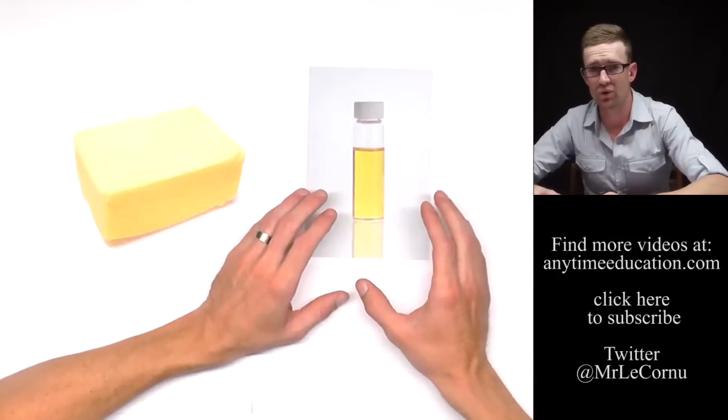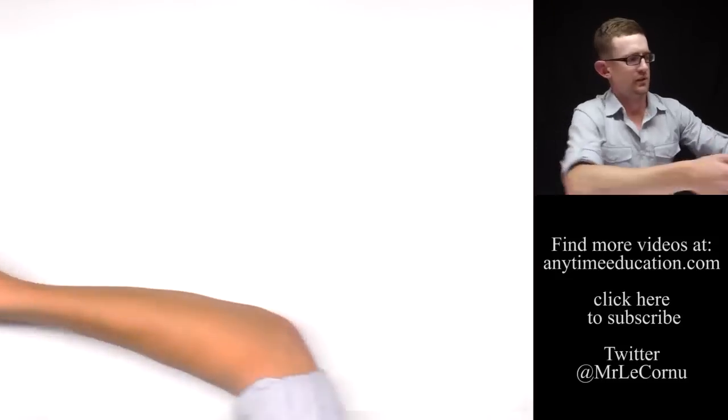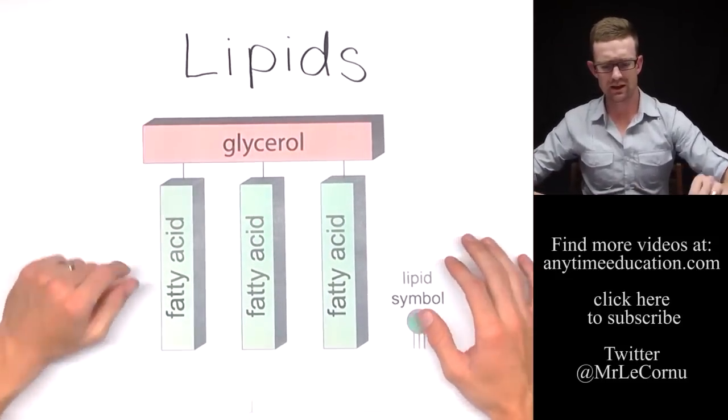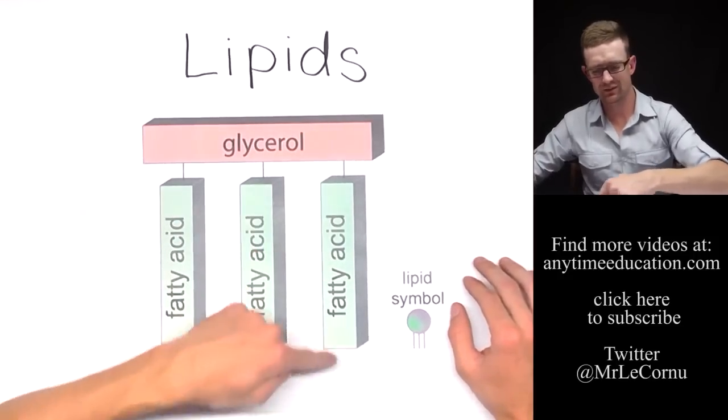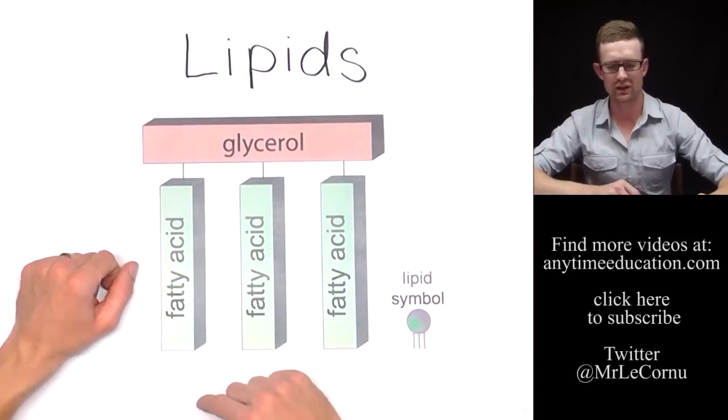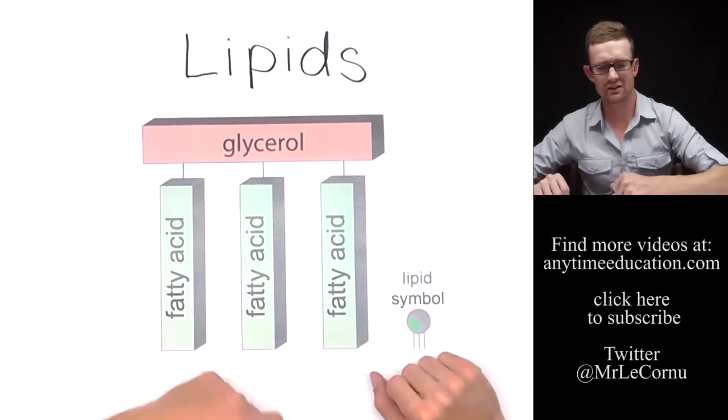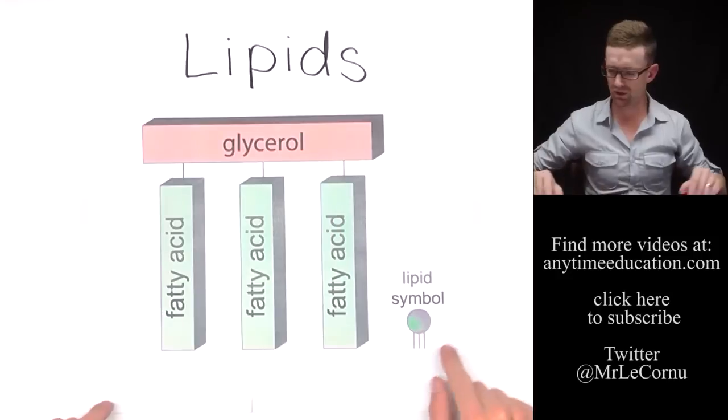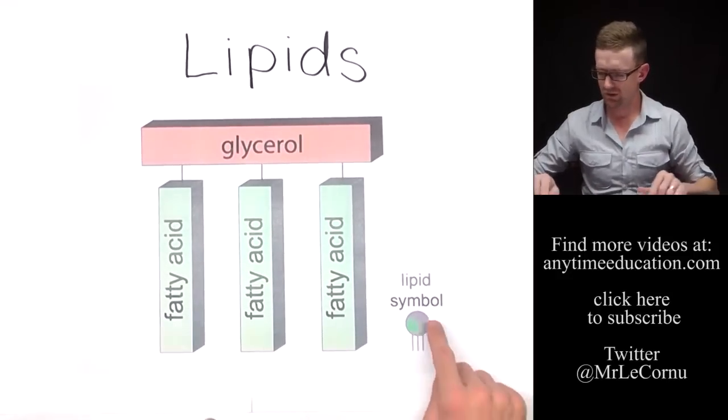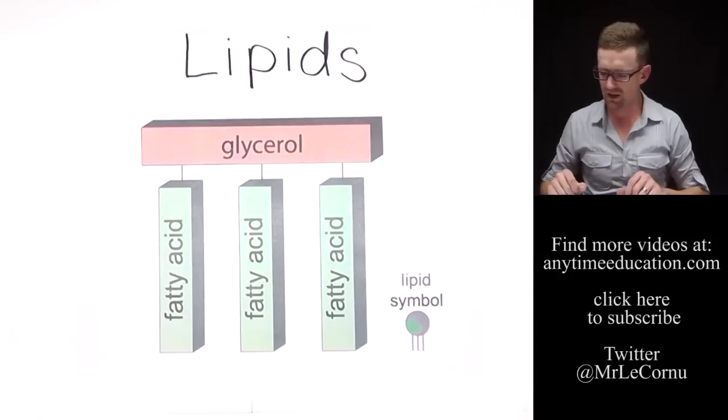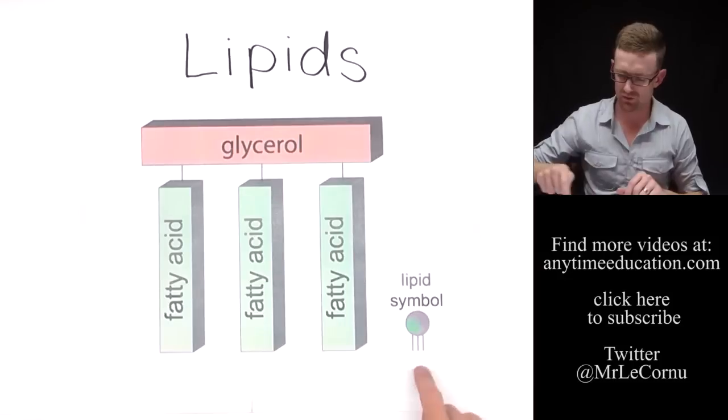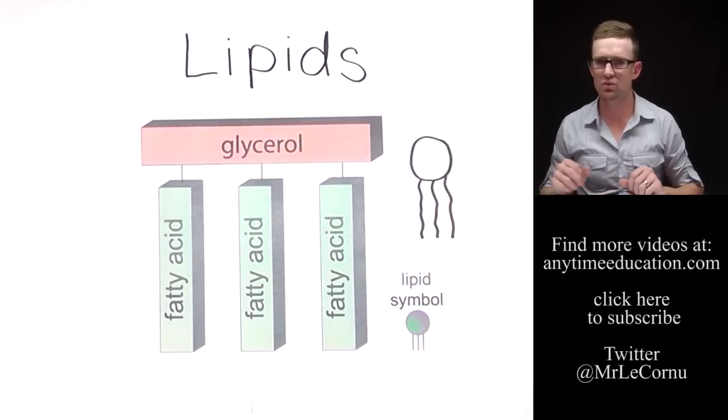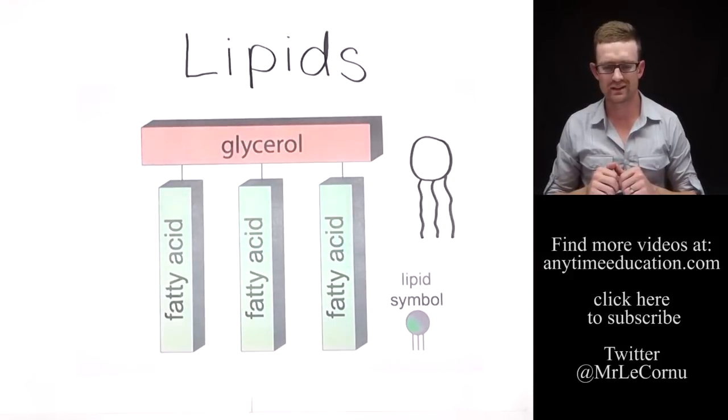So a lipid molecule looks like this. They're made out of three fatty acids, which are just represented by these rectangles here, and those fatty acid chains are joined to a glycerol molecule. The symbol that we use is this symbol here - it's a circle with the three tails coming off of it. So the circle representing the glycerol and then the three fatty acids. I've also drawn a picture there of the symbol, that's how you often see it drawn.